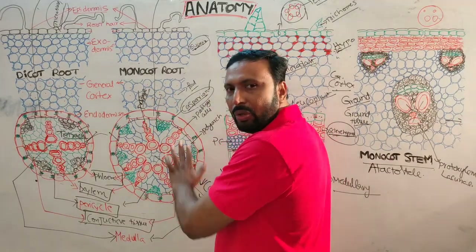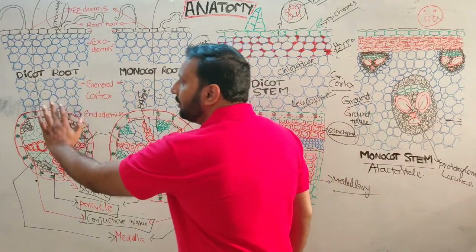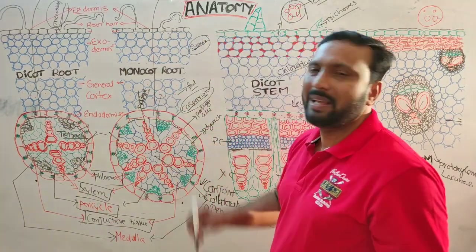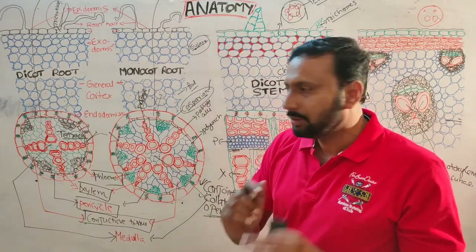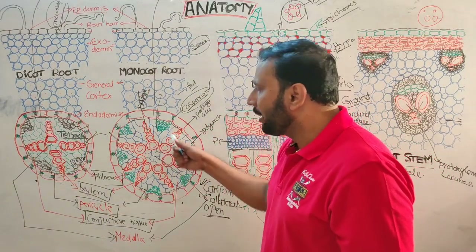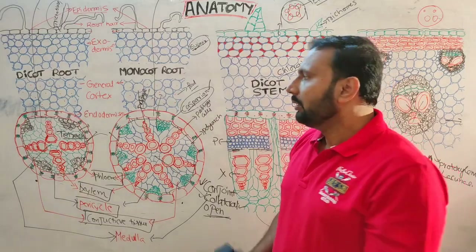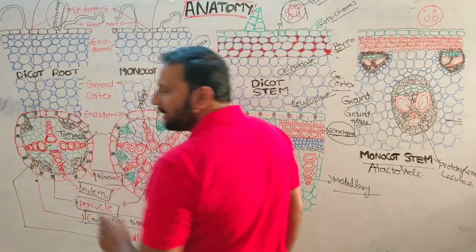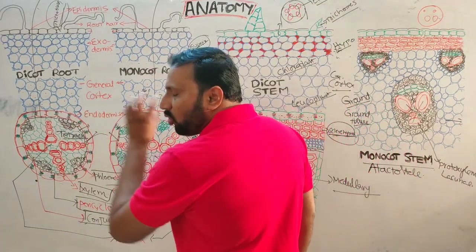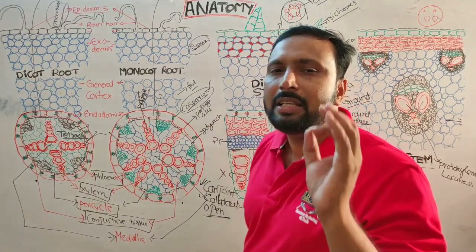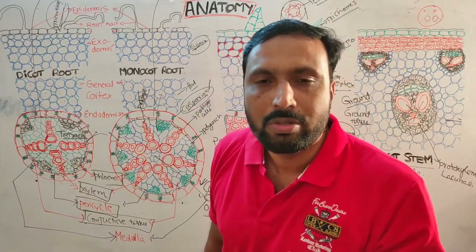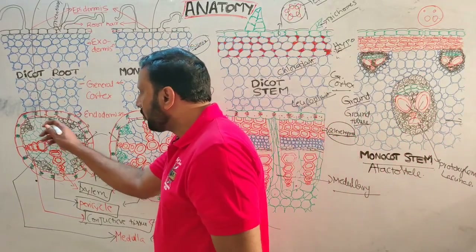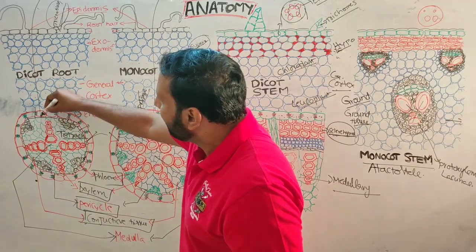Passage cells are more numerous in monocot roots than in dicot roots, because monocot roots have more xylem bundles. The central conducting tissue is called the stele. Generally, stele content is less in roots and more in stems.